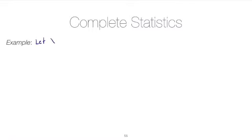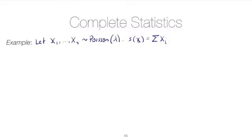Now let's look at an example. Let's consider a random sample from the Poisson distribution with rate parameter lambda, and let s(x) be equal to the sum of the x_i's. We've already shown that this is a sufficient statistic. What we're about to do here is show that it's also complete.